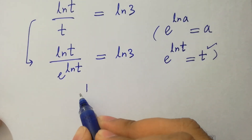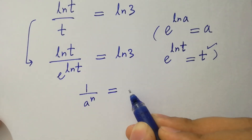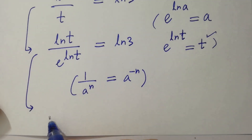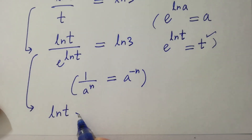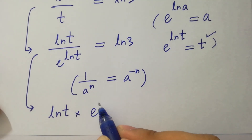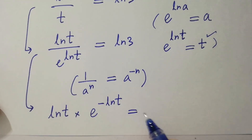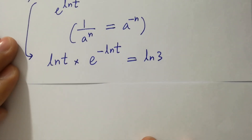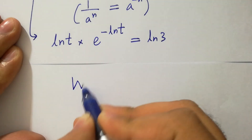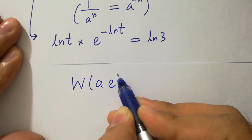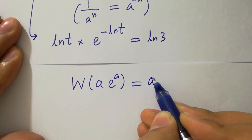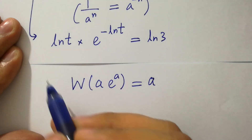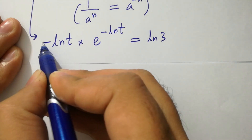As 1 over a to the power n equals a to the power minus n, then we have ln(t) times e to the power minus ln(t) equals ln(3). We recognize this involves the Lambert W function, where w(a times e^a) equals a. Since we have e to the power minus ln(t), we take minus on both sides.